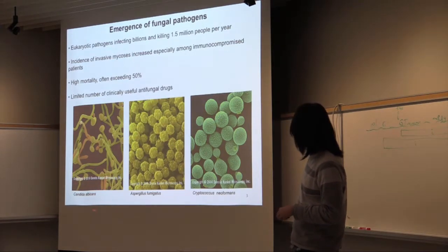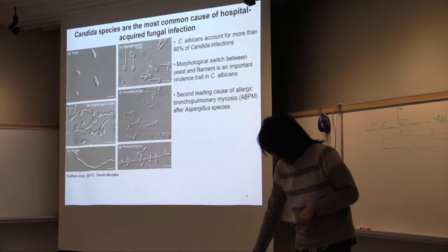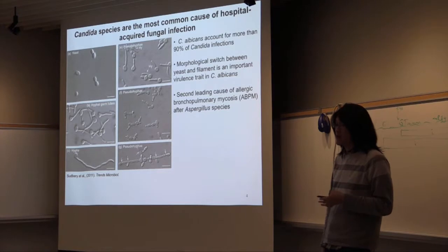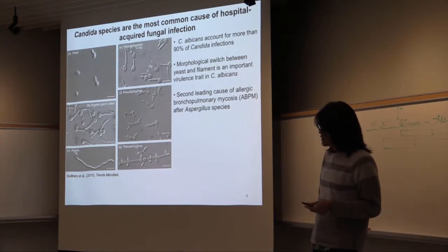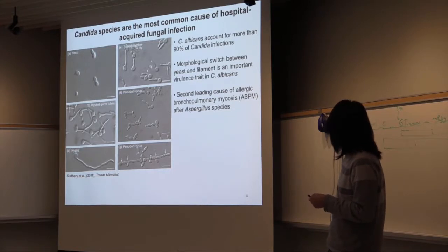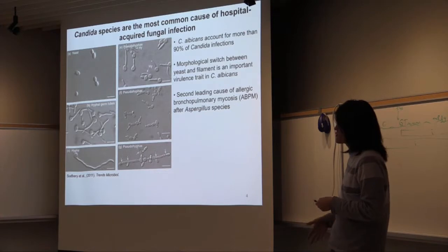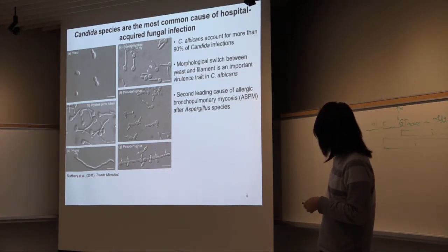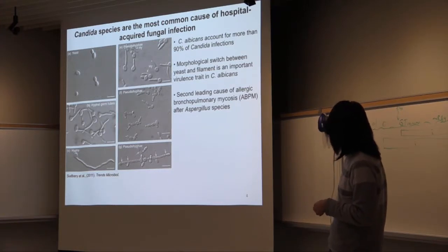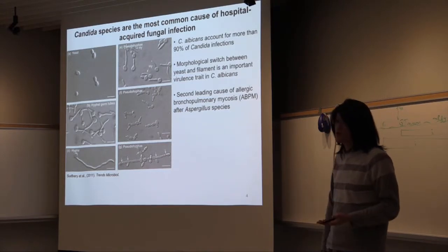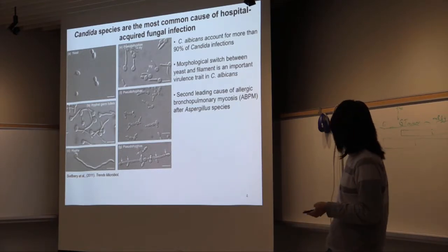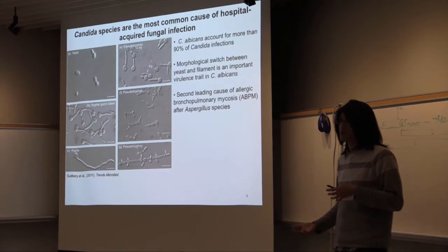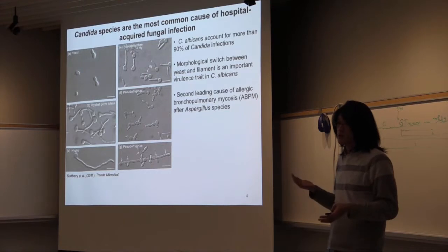Today I'll focus on the single fungal pathogen Candida albicans. Candida species are the most common cause of hospital-acquired fungal infection, where Candida albicans accounts for more than 90% of Candida infections. Candida albicans is a diploid organism able to switch between multiple morphologies — yeast forms under standard lab conditions such as 30 degrees and rich media — as well as hyphae and pseudo-hyphae forms, which I'll call filaments, under specific cues such as increased temperature, presence of serum, and cell stress. This morphological switching is thought to be a very important virulence trait in Candida albicans.